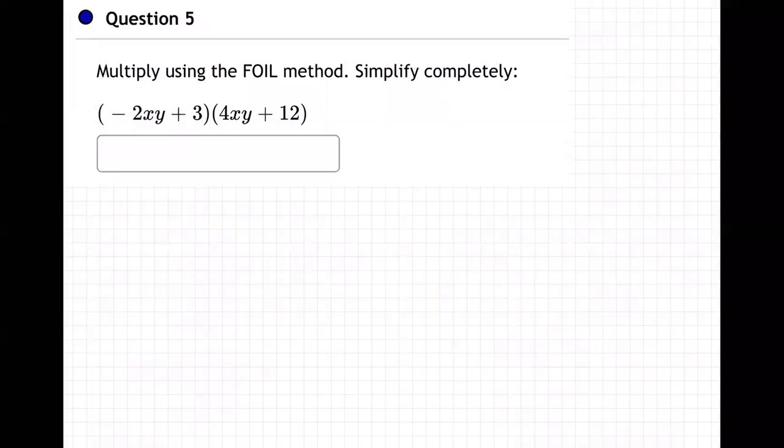So, on this one, we are supposed to multiply using FOIL and simplify completely. Okay, so what does that mean? That means we take this first minus 2xy and he's going to go to both of these two. It's like they take turns. First to both, and then when we're done, the three will have his turn and he'll go to both.